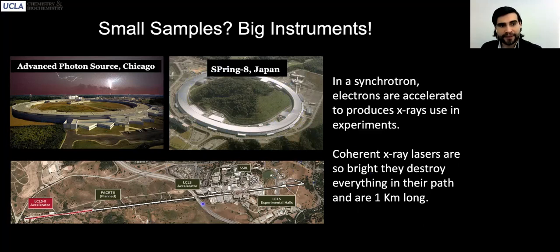Even bigger instruments now can pack brighter and brighter x-ray beams. This is an example of a linear accelerator at Stanford, a kilometer-long machine, billions of dollars required to build this machine to be able to pack enough x-rays to diffract from the smallest possible assemblies that we've been able to garner.